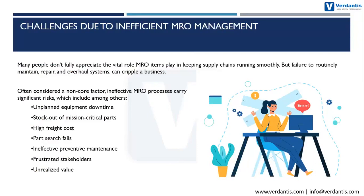What challenges do clients face after neglecting MRO governance? They run into false stock-outs: a line-down situation where I have the part stocked, but looking at the bill of materials I see an internal part number that's not in stock — not realizing there's a functionally equivalent part in another bin with a different description. This leads to expediting parts at additional cost. It prevents finding parts for preventive maintenance. When I can't find a part, I either request a duplicate or spend days looking — very frustrated users leaving a lot of value on the table.